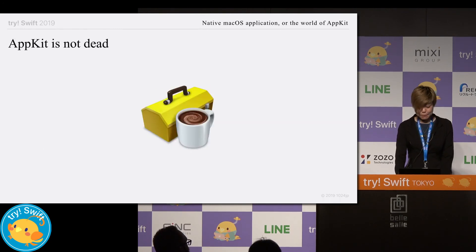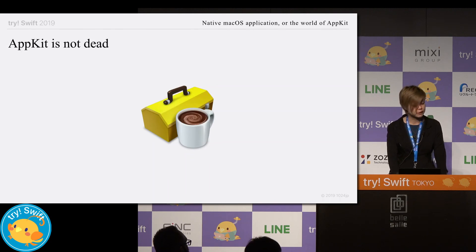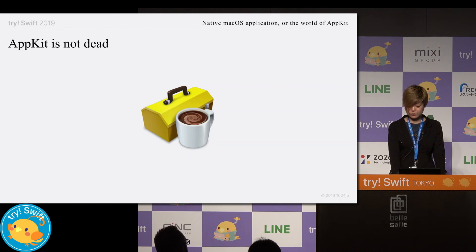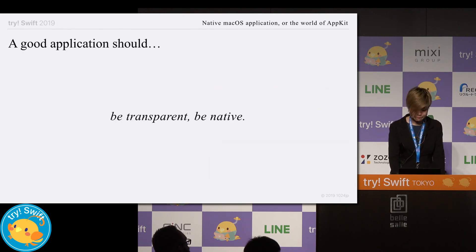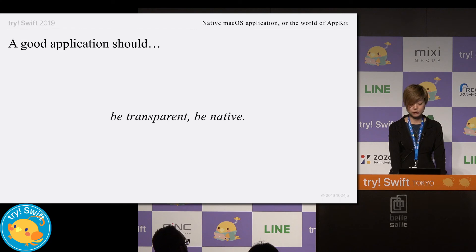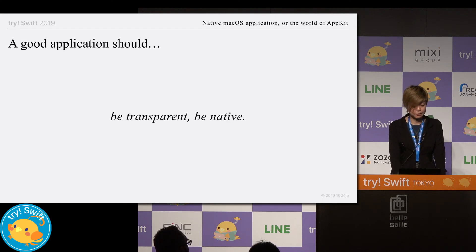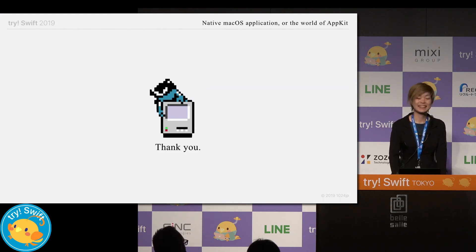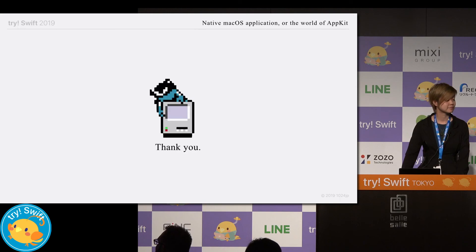Don't be afraid — AppKit is not a terrible old-school version of UIKit. It's just a bit different from what you're used to. Furthermore, you already know macOS well because you use it every day, and you know macOS is a beautiful operating system that makes your life happier. Let your macOS app merge into it. To sum up: a good application should be transparent and native. Minimize the ego of developers and let your users concentrate on the essence of your service. Use native frameworks, respect the Human Interface Guidelines, and write code in the native language. Enjoy development. Thank you.